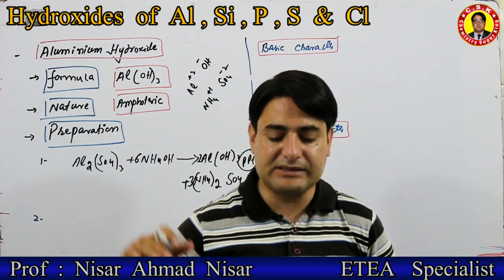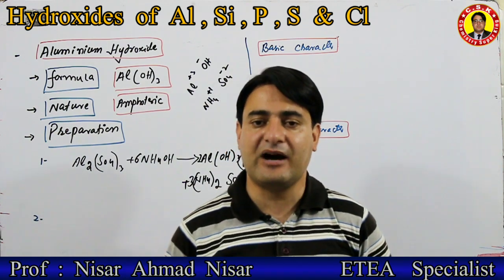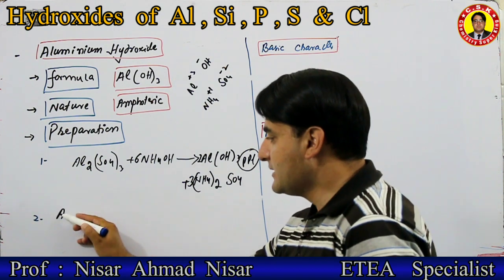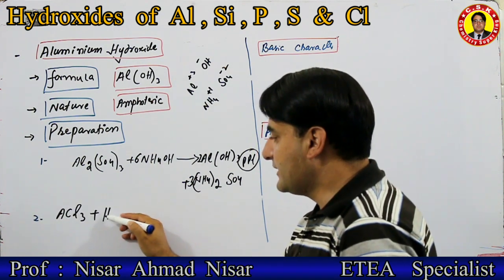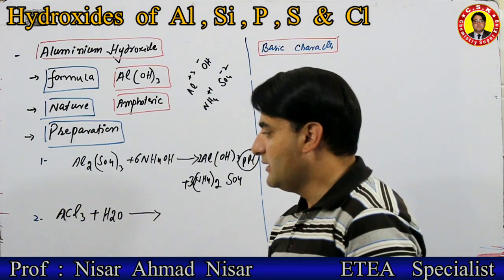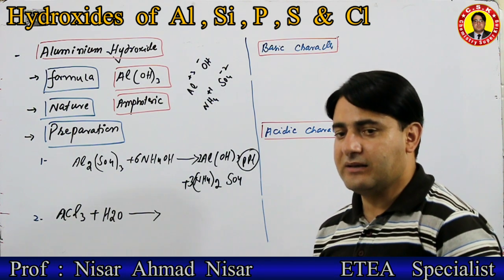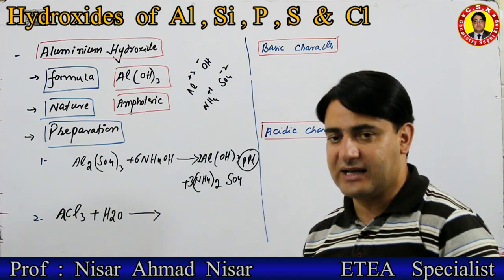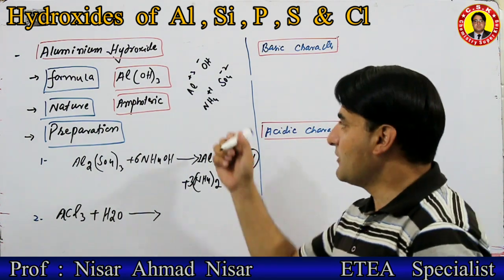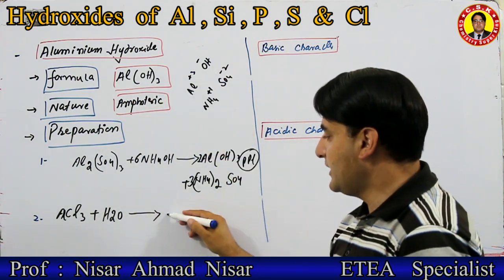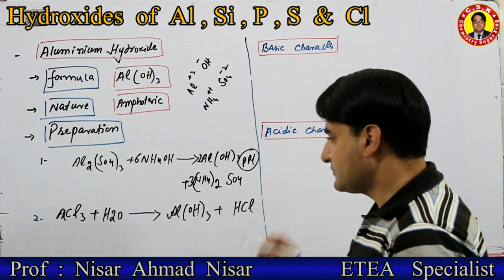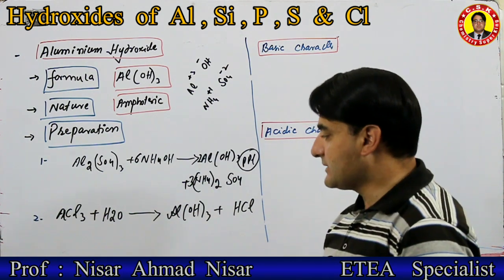دوسرا method — جب aluminium chloride کی hydrolysis کریں excess of water سے تو aluminium hydroxide بن جاتا ہے۔ AlCl₃ میں ہم water ڈالیں excess میں — simple reaction ہوگی — aluminium ملے گا water کے hydroxyl کے ساتھ۔ Aluminium کی valency plus 3، hydroxyl کی minus 1 — تو Al(OH)₃ بنے گا ساتھ HCl بنے گا۔